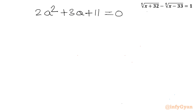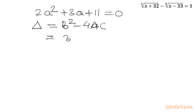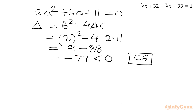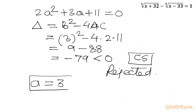For the quadratic 2a² + 3a + 11 = 0, we check the discriminant B² - 4AC = 3² - 4(2)(11) = 9 - 88 = -79. The discriminant is negative, meaning only complex solutions exist — so these are rejected. We accept only a = 3 as the valid real solution.